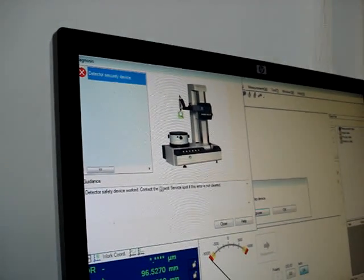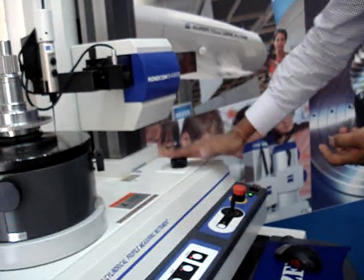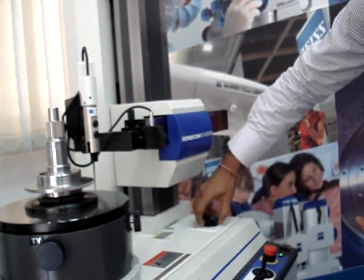It says that detector safety device will contact the service department if it is not cleared. Fine. The machine is locked now. Nothing will move. I have got manual override. So I move the machine up.